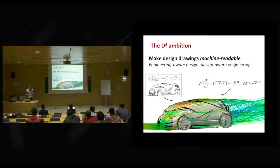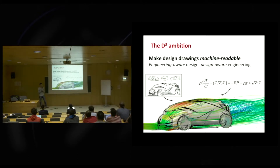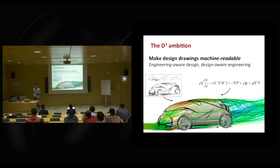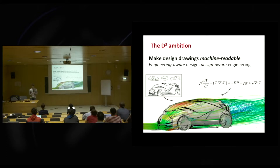The overall ambition of the ERC project is to allow computers to understand drawings, with the goal of providing engineering tools directly to the designer as soon as he starts drawing, or to provide more design alternatives to engineers. I'm illustrating this goal with an example — not an actual result, but what we'd like to achieve. Imagine a car designer drawing a car and asking the computer to perform a fluid simulation, which reveals the windshield is not very aerodynamic, so the designer can redraw that part. The idea is to bring a closer interaction loop between design and engineering.